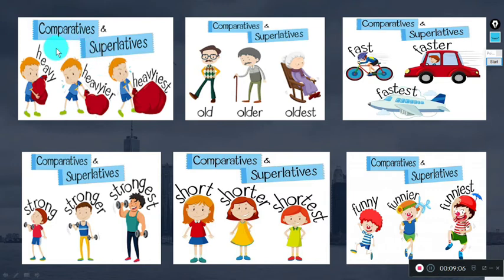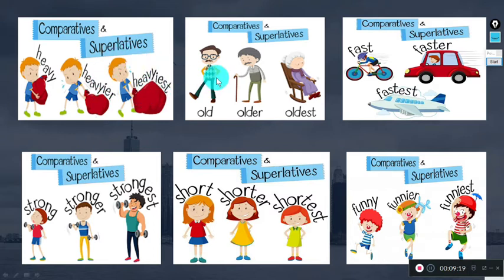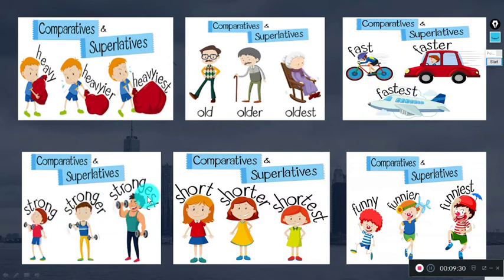Let's review the main comparative and superlative forms: heavy → heavier (comparative) → heaviest (superlative). Old → older → oldest. Fast → faster → the fastest. Strong → stronger → strongest. Short → shorter → shortest. Funny → funnier → funniest.